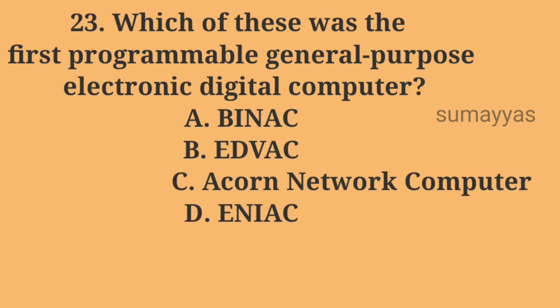Which of these was the first programmable general-purpose electronic digital computer? Option A: BINAC. Option B: EDVAC. Option C: Account Network Computer. Option D: ENIAC. The correct answer is Option D: ENIAC.